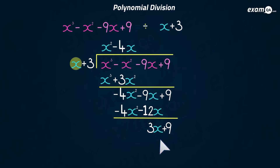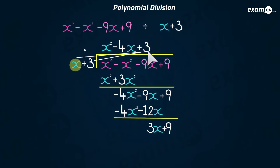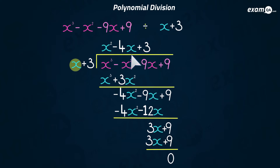This time we're focusing on the three x. How do we turn this x into three x? You need to multiply x by three — so three goes at the top as part of the answer. Three times x is three x, and three times three is nine. Now the subtraction: you can see if you subtract these you get zero, which is excellent — that means it goes in exactly. Our answer is what we have at the top: x squared minus four x plus three.